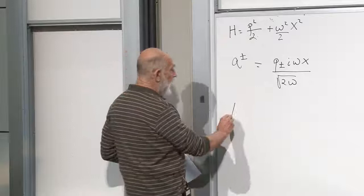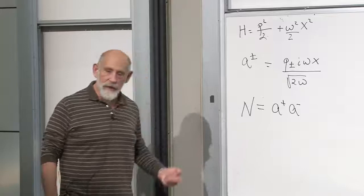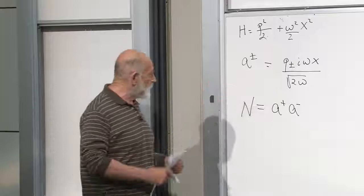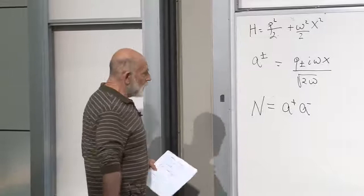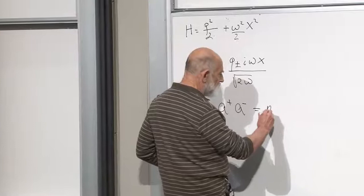One more quantity is called N. N is equal to A plus times A minus. We proved last time that the spectrum of eigenvalues of N were just the integers starting at 0. We showed that A plus and A minus were raising and lowering operators which raised and lowered the eigenvalues of N. This is an operator whose eigenvalues are 0, 1, 2, 3, and so on — no negative ones.